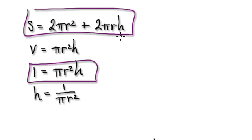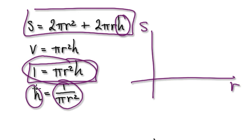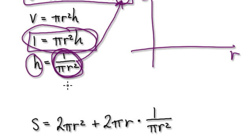Rearrange this so that we can later plot a graph of the surface area versus the radius. We don't want this H here, so rearrange to get h = 1/(πr²), and put this into the H here. So S will become this.